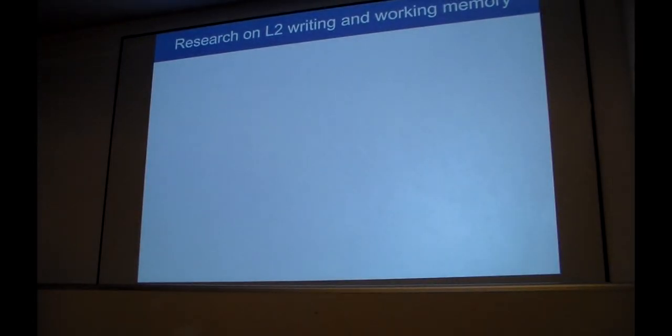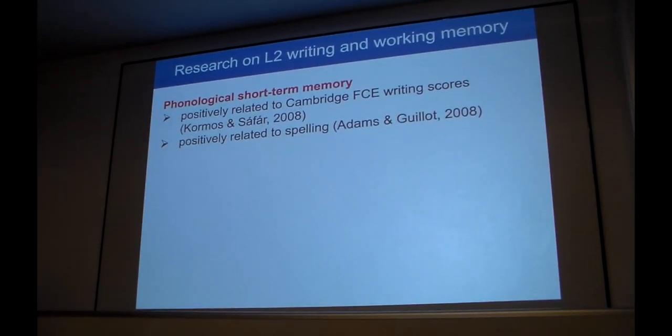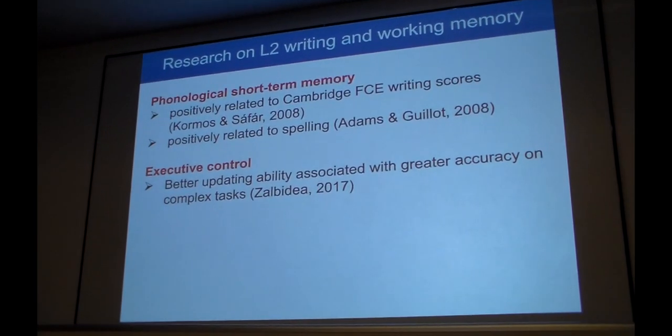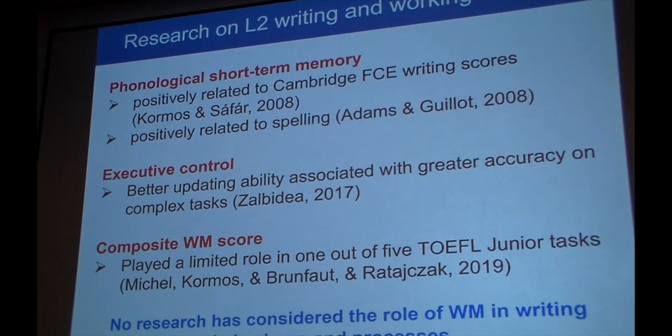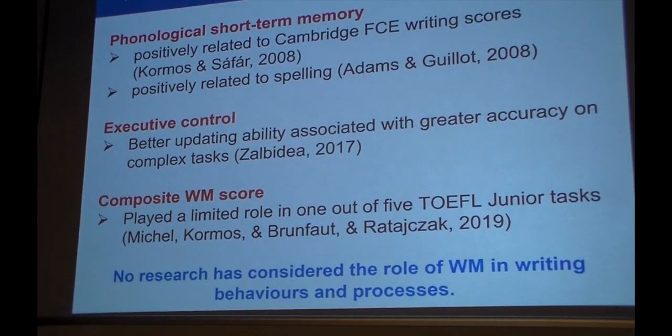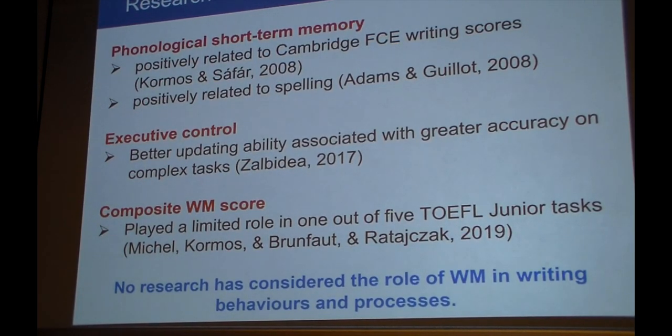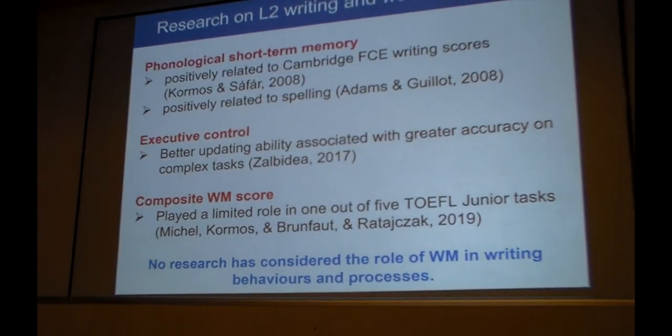So far, very little research has looked into the relationship between second language writing and working memory. Let me just summarize the findings of this kind of research. Kormos and Safar found a positive relationship between phonological short-term memory and performance on a Cambridge FCE certificate test. And in another study, there was a relationship found between spelling and phonological short-term memory. In a more recent study, Zabihi found executive control to be important in writing. She found that better updating ability was associated with greater accuracy on complex writing tasks. And finally, in the most recent study on second-language writing, Michel et al. found a limited role in one out of five TOEFL junior tasks. But so far, none of these studies have looked into the role of working memory in writing behaviors and processes. All of these studies have considered the writing product, so this was a gap we wanted to fill in our research.